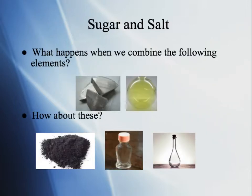Before we start, I'd like to ask you a couple questions. What happens when we combine the following elements? The first example is a silvery metal with a greenish-yellow gas. And down below, we have a black, chalky substance, and what looks like two vials of clear gases. What happens when we combine the two or three?